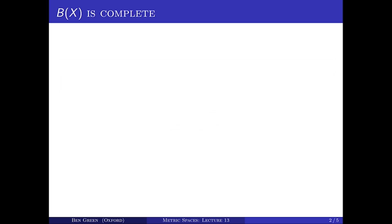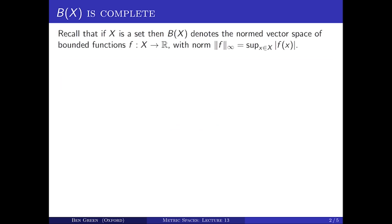Let's look first at the space of bounded functions on a set X. Let's just recall what it is. X here is just an arbitrary set, and B(X) is the normed vector space consisting of all bounded functions from X to the reals, with the sup-norm or infinity norm, defined to be the supremum over all little x in big X of the absolute value of f(x).